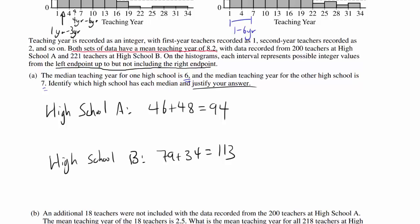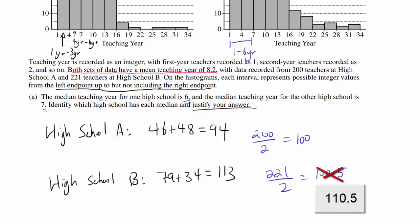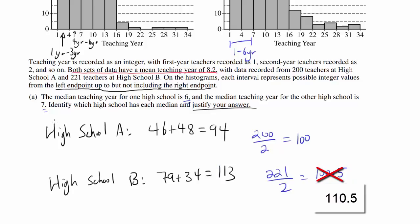For high school A, we have 200 teachers, so we want to look at around the 100th value. For high school B, we have 221 teachers, so we're looking at around the 110.5th value. We see that for high school A, the number of teachers that have taught 6 years or below — 94 — is lower than the 100th value. And for high school B, the number of teachers that taught 6 years or lower — 113 — is more than the center value. So we know for high school A, the median has to be larger than 6, and for high school B, the median has to be 6.